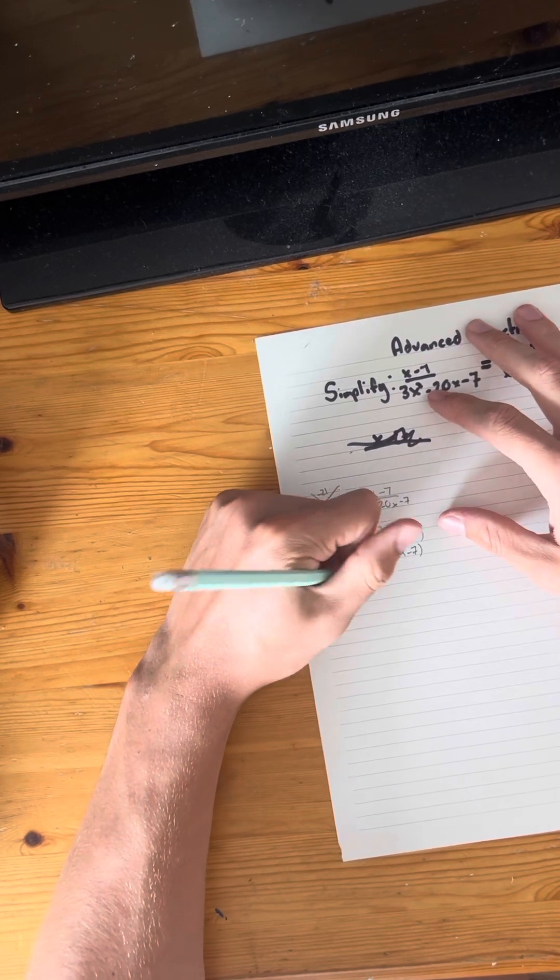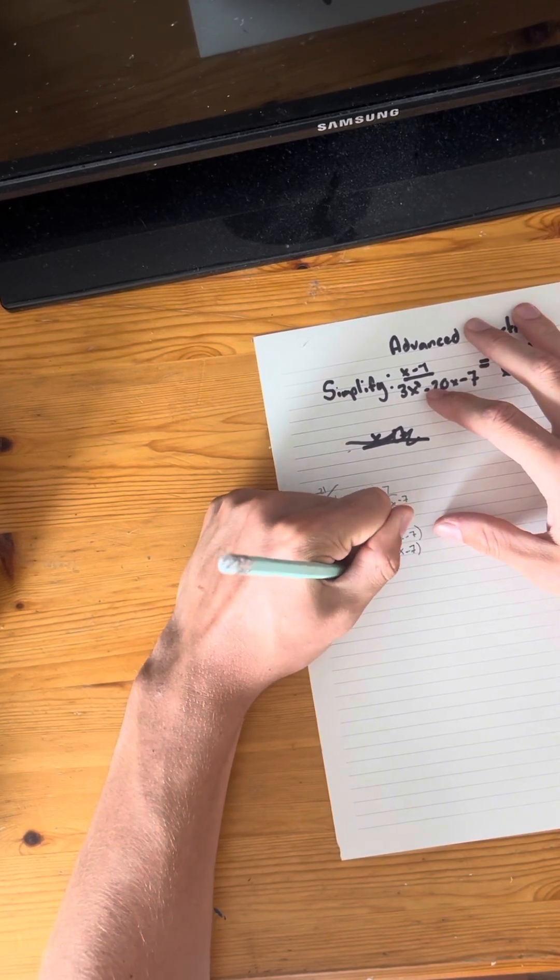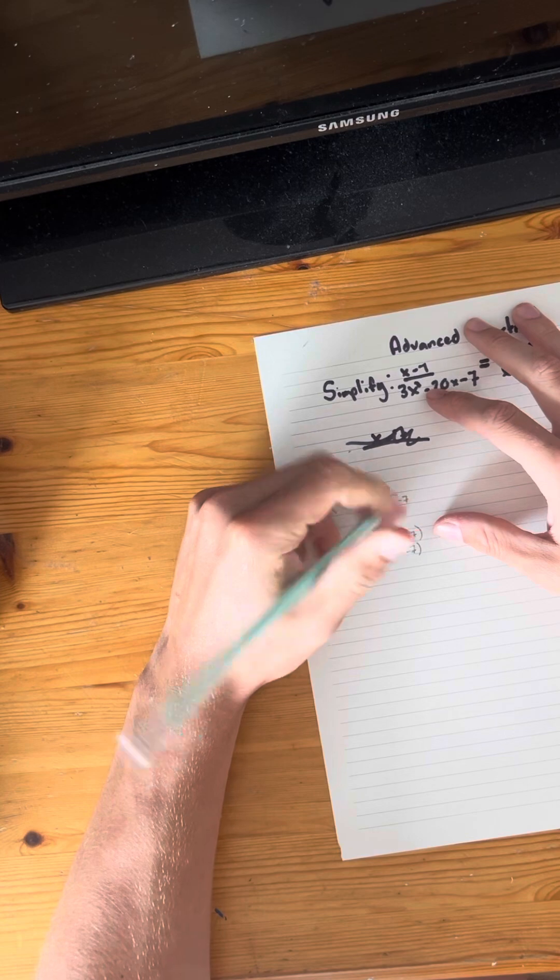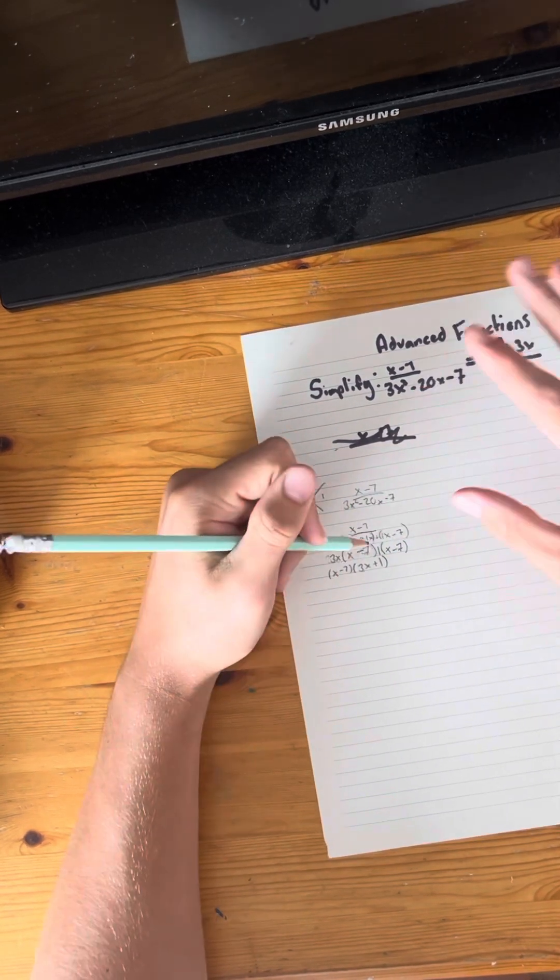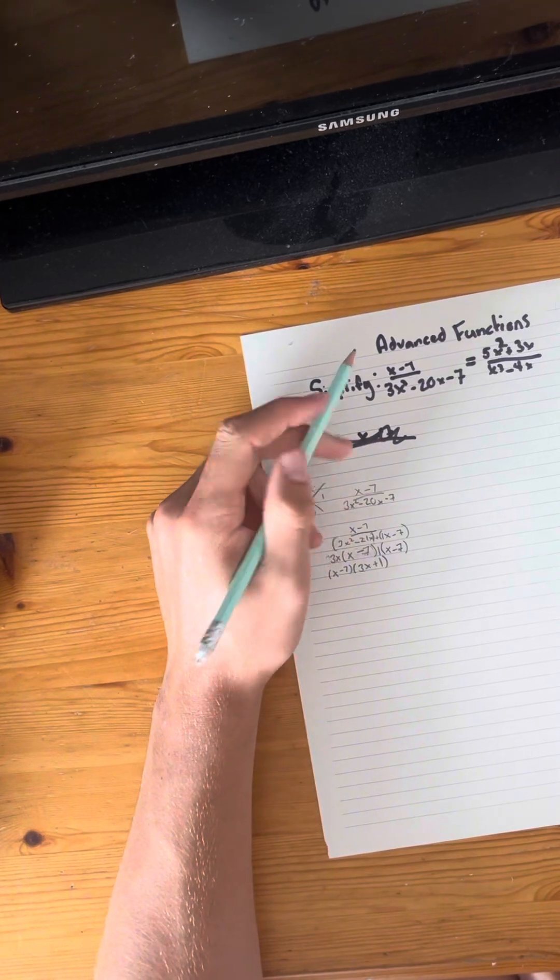And that means that your final answer would be x take away 7. Now the brackets 3x plus 1. And there you go, that's the start of this expression.